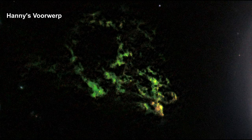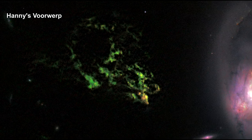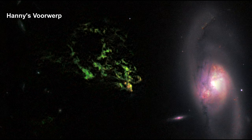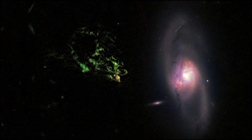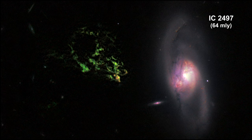Hanny's Voorwerp is one of the strangest space objects ever seen. A mysterious glowing green blob of gas is floating in space near a spiral galaxy, IC 2497.